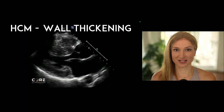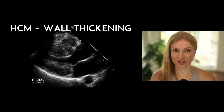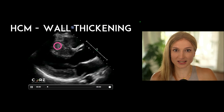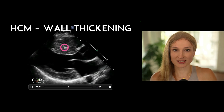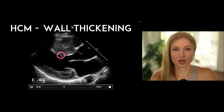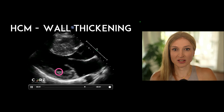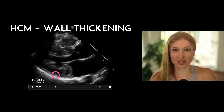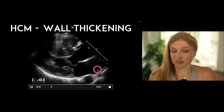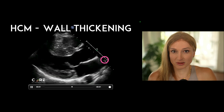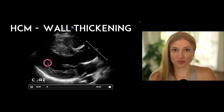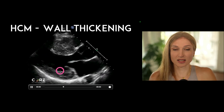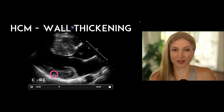Here is a patient with HCM. When we look at the septum, we can see that it is pretty thick relative to the posterior wall. This is a patient with HCM — this is what it looks like. This septal wall is much thicker than the posterior wall.